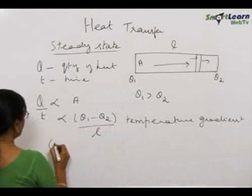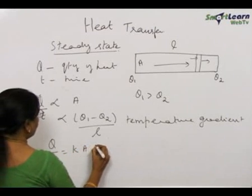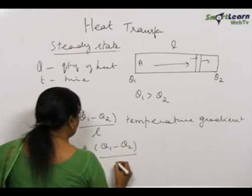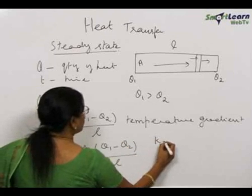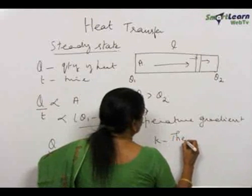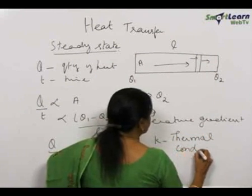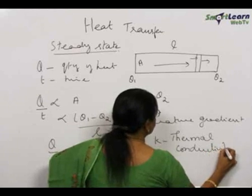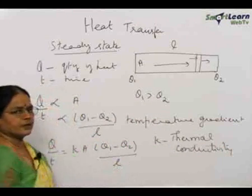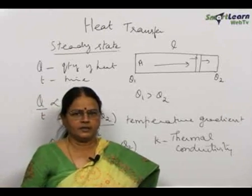Then we can write Q by T equal to K A theta 1 minus theta 2 by L, where this proportionality constant K is called thermal conductivity of the material or coefficient of thermal conduction. K is known as the thermal conductivity of the material.